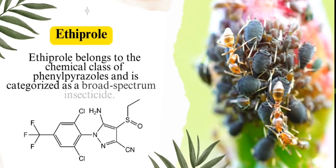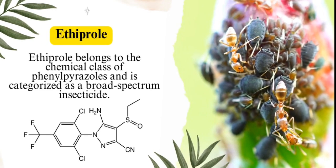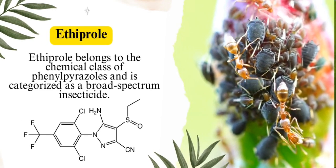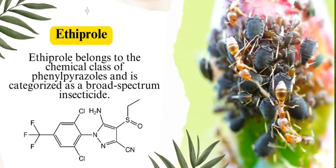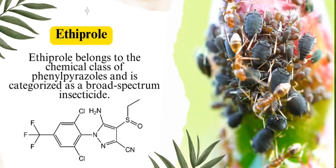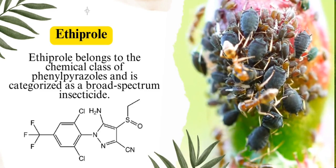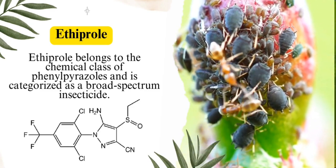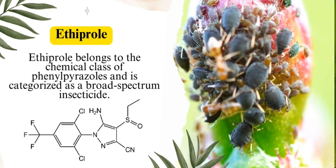Ethiprol. Chemical class and types. Ethiprol belongs to the chemical class of phenylpyrazoles and is categorized as a broad-spectrum insecticide.